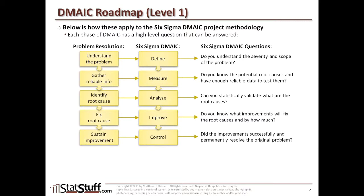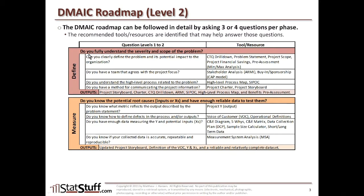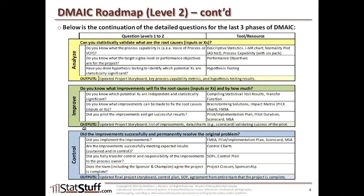We took that a step further — what we call level one — where at the top level we have each of those different questions for each phase within DMAIC. We then dug into a second layer, going deeper, where for each phase we have the top-level question, and if you cannot answer yes to that question, you ask the second layer of questions. These guide you to the different tools or resources that help answer those questions and ultimately the top-level question, moving phase by phase all the way through the control phase.